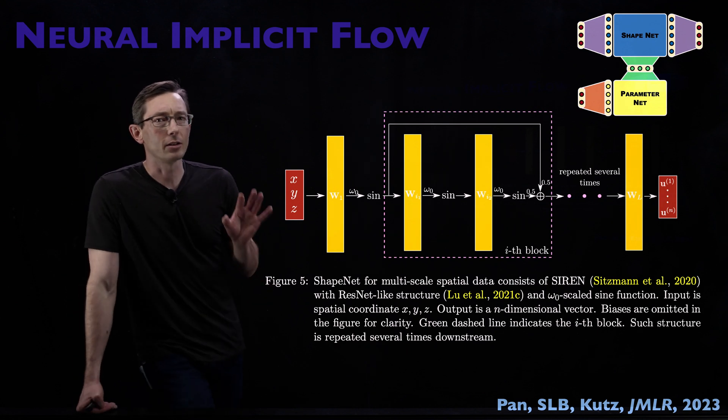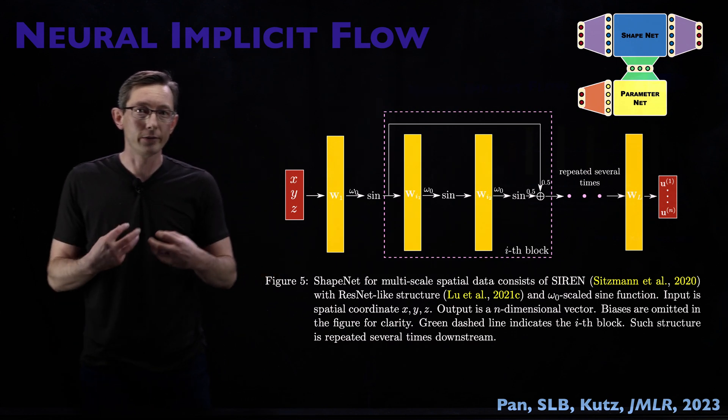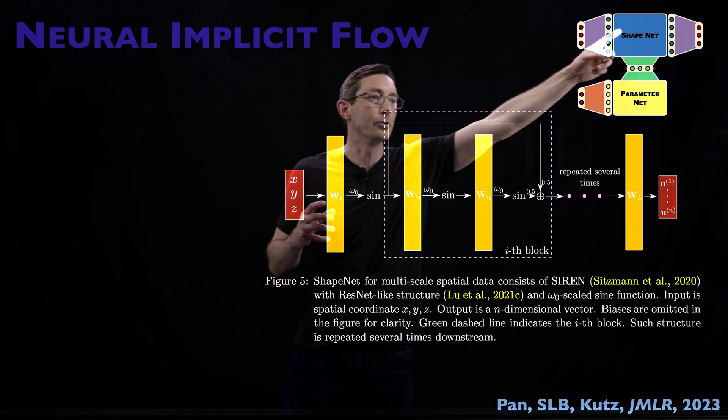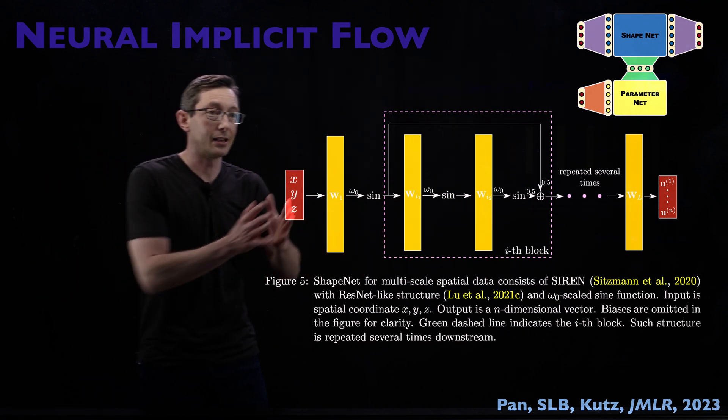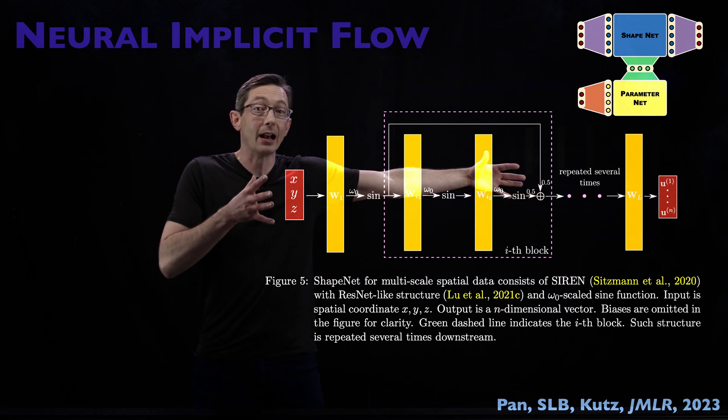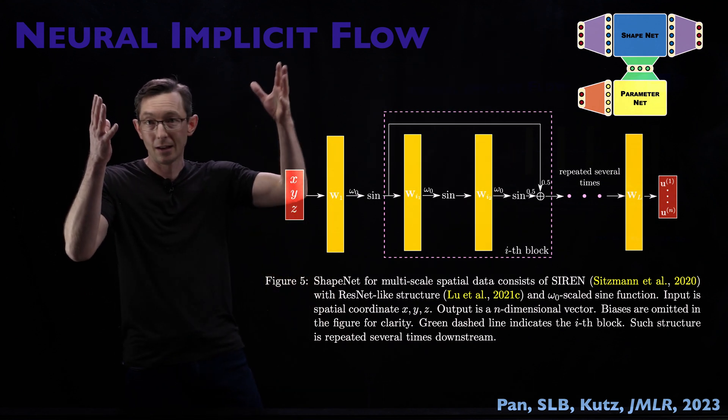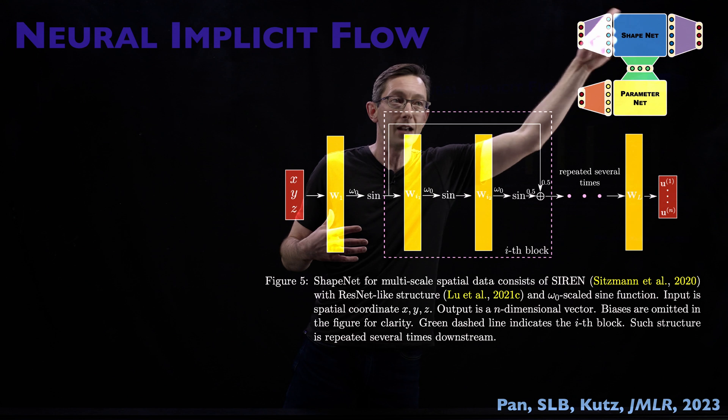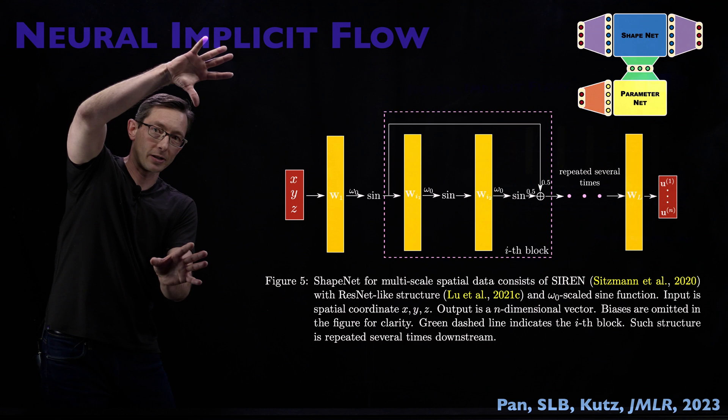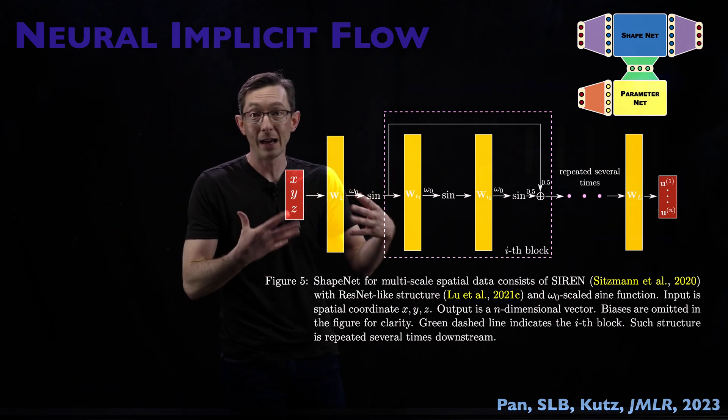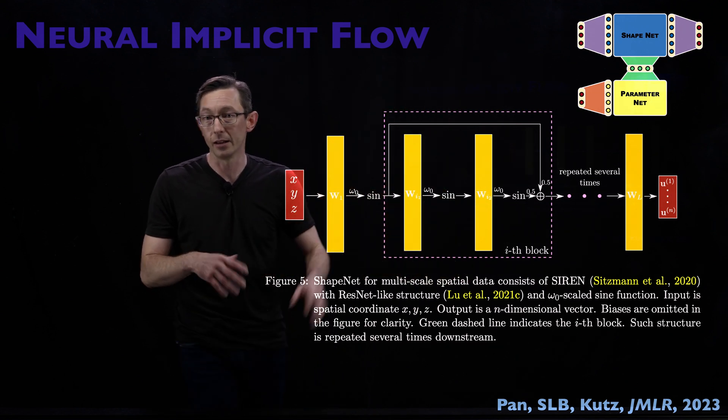And then I mentioned that there are a lot of different ways you can actually build that Shape Net. So there's a lot of customization. You can use all of your intuition of how you think you can represent those spatial functions, u as a function of X. So you can use things like, this looks a lot like a residual network. You can use something akin to a ResNet with siren layers, or you can build something that's akin to a U-Net if you wanted to. So your Shape Net, there's a lot of flexibility here. And by offloading the time dependence and the parametric dependence to the Parameter Net, you can have the Shape Net do what it does best, which is represent these spatial functions using either a ResNet or a U-Net or something like that.